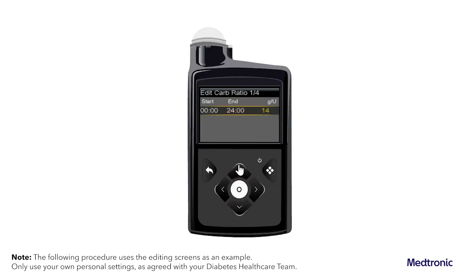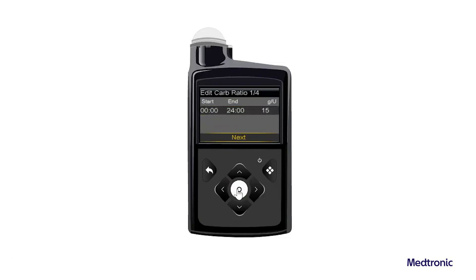Note: the start time of the first time segment is always midnight. Up to eight time segments can be set for carb ratio, sensitivity, and BG target, each with a different value. All time segments must add up to a 24-hour period. Select Next. Note: if the values are outside of the value range, a message asks to confirm the settings. The Sensitivity 2 of 4 screen appears.